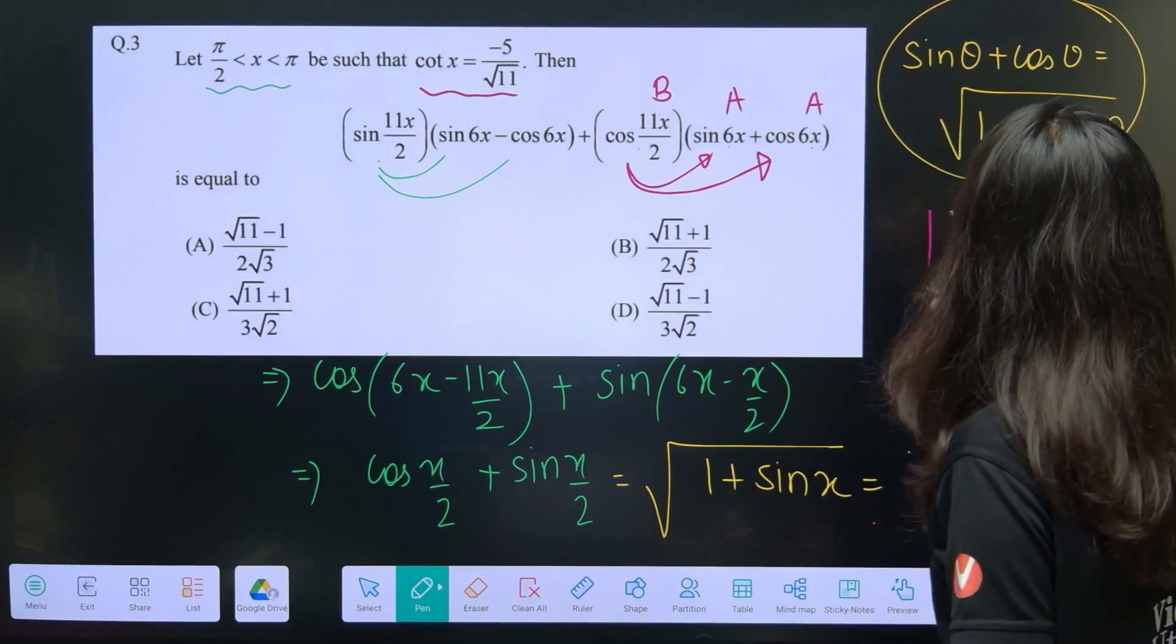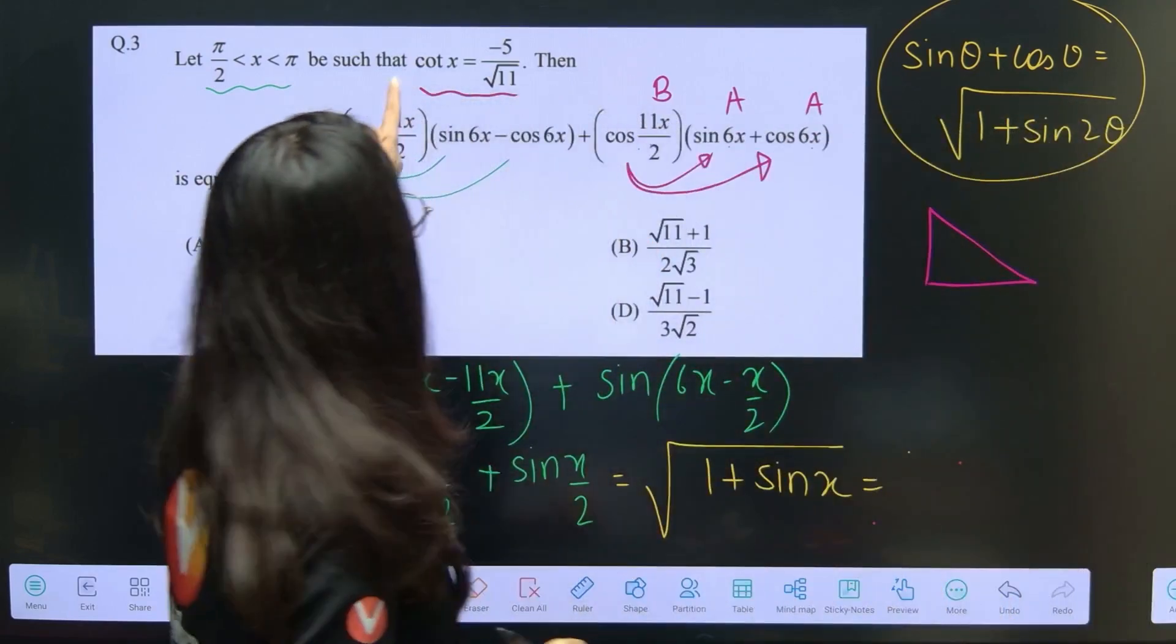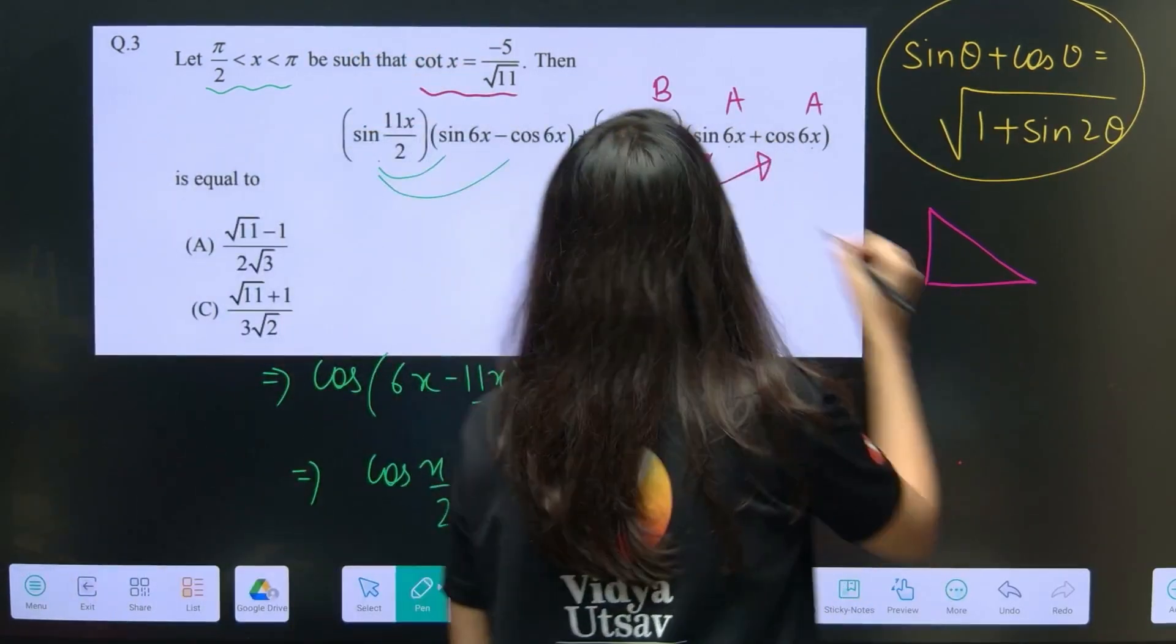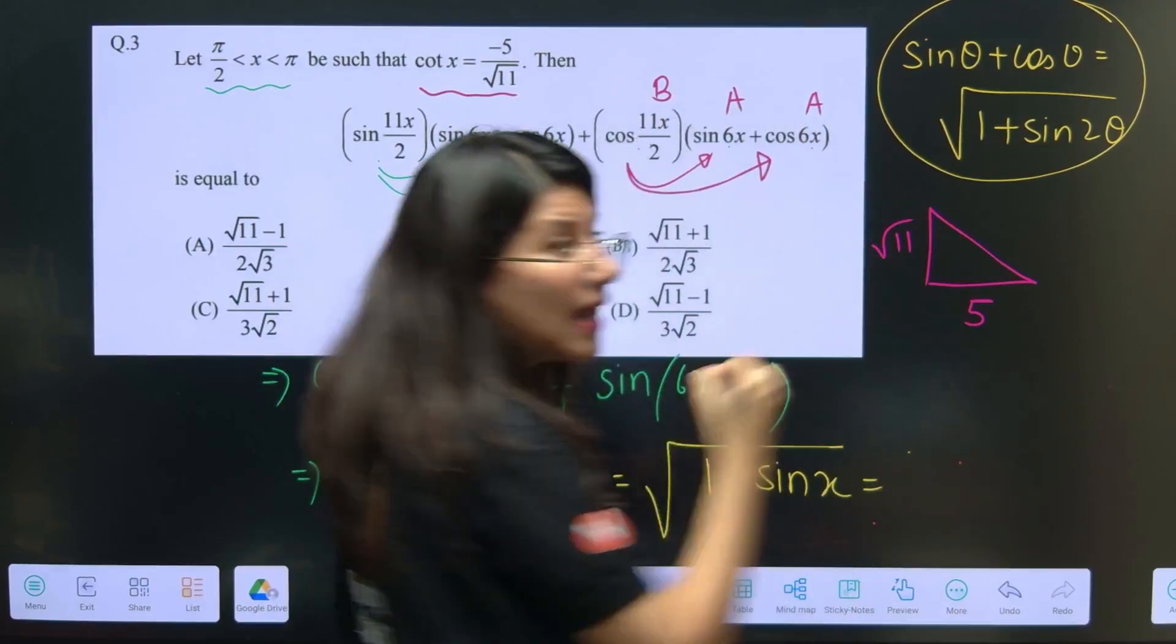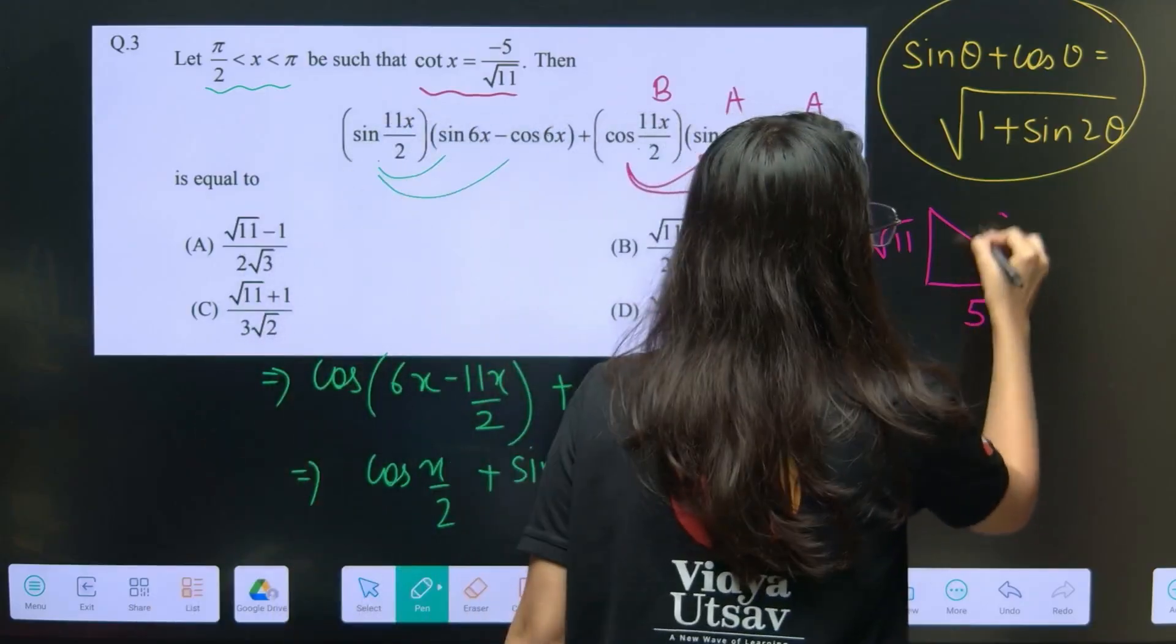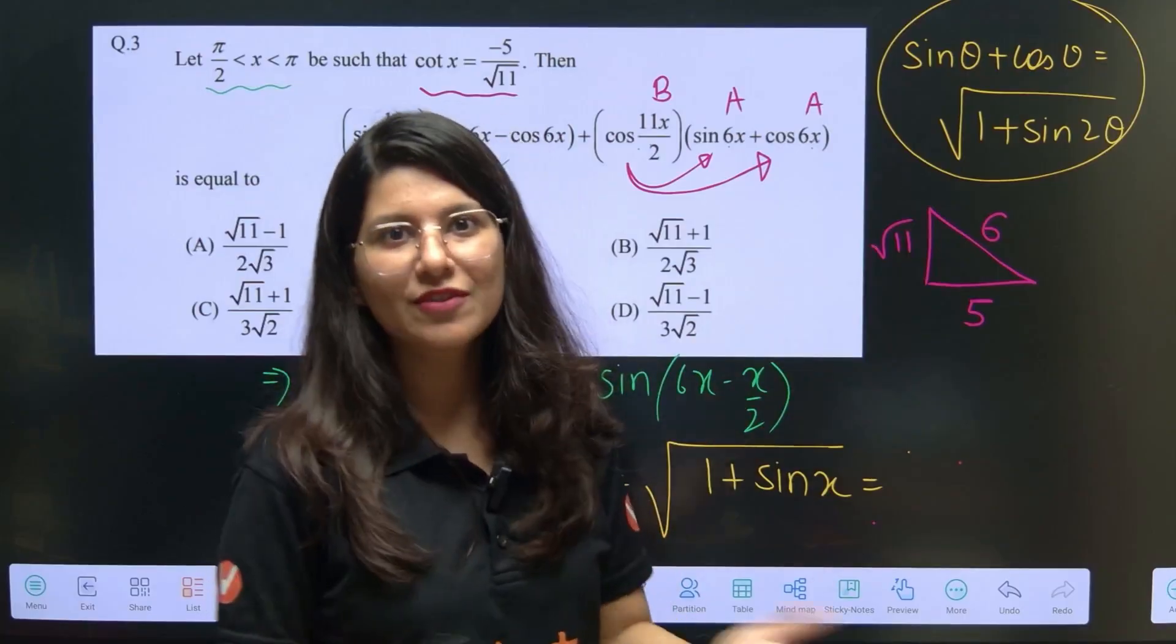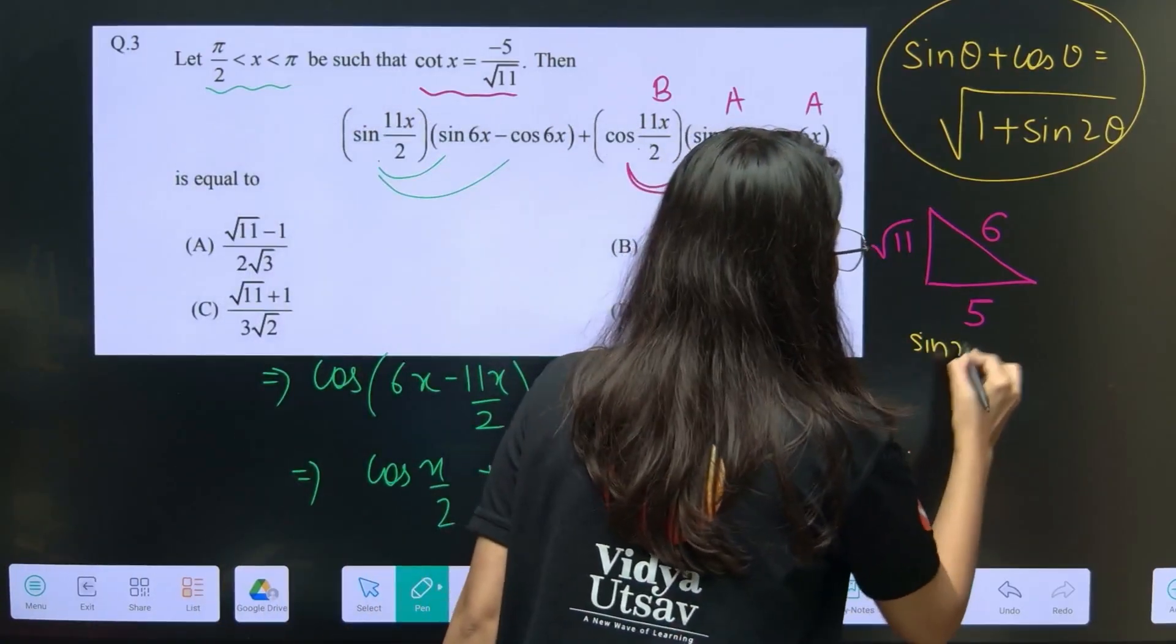Now what do you want? You want just sin x and your question will be done and dusted. Cotangent x is minus 5 by root 11 and x is lying in second quadrant. In second quadrant ASTC, sine will be positive. So now what I'm going to do is I am going to draw a triangle. Cos theta is what? Base upon hypotenuse, 5 by root 11. So 5 is this, root 11 is this. Apply Pythagoras theorem, hypotenuse will be root 36 that is going to be just 6.